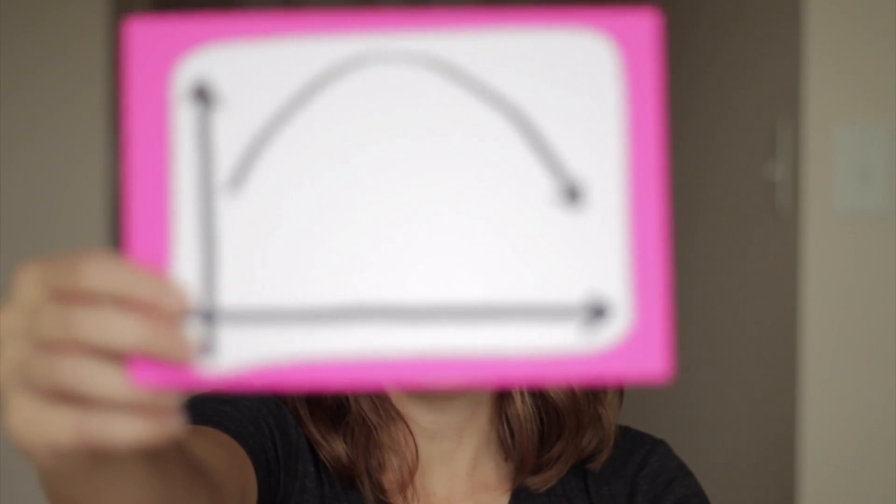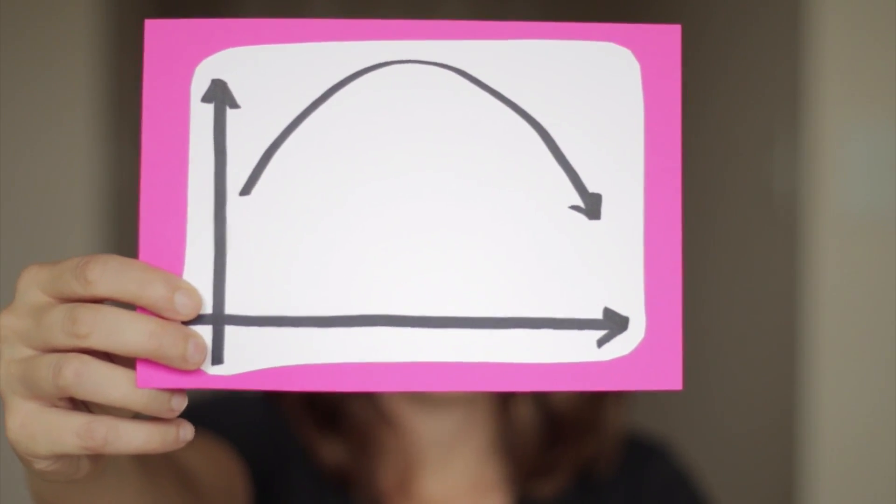Which one of these do you think trapezoidal rule does a better job estimating? This one? Or this one?